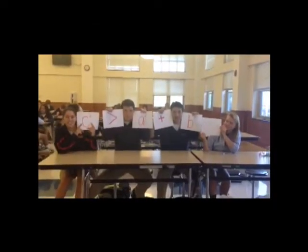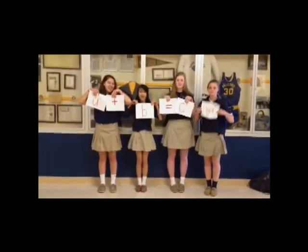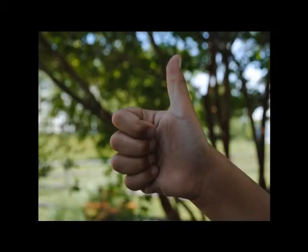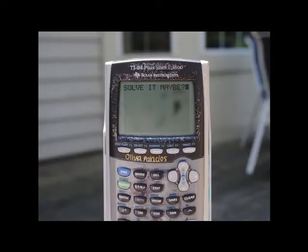If the square of one side is equal to the sum of squares of the other sides, that's a right triangle, baby. Hey, that's a problem, and it's so easy. Just use the theorem to solve it, maybe.